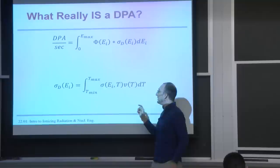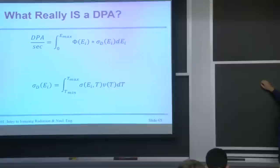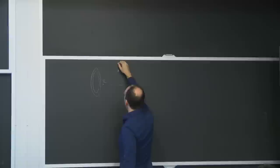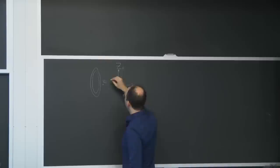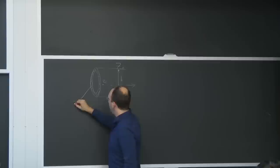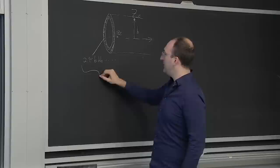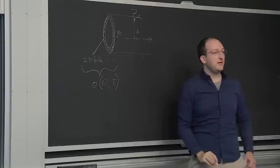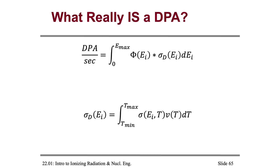It's an energy dependent flux times another type of cross section that we call the damage displacement cross section, or sigma d, integrated over your entire energy range. And that's all there is to it. So with what you know in 22.01, you can understand the basic unit of radiation damage. What goes into this damage displacement cross section is also something that might look a little familiar. Here is a cross section that says, what's the probability of some particle coming in with energy E and imparting kinetic energy T to another struck atom? That comes right from our hollow cylinder treatment of a charged particle with charge little ze interacting with a particle of charge big ze at some impact parameter b.